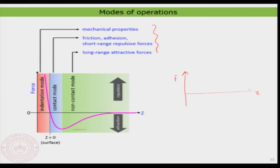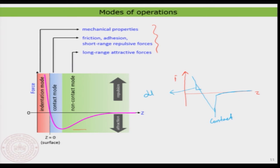When you approach in ambient conditions, initially you observe a very small variation in force. Then suddenly you find snap-to-contact. This is because the moment you come close, there is a huge force acting on the cantilever and the cantilever force constant is not capable of withstanding that force, so it comes directly into contact. Once you are in contact and approach further, you get into indentation mode. The slope here is interesting — df/dz — which is the so-called deformation or hardness of the material.